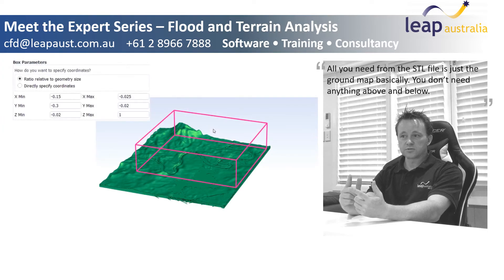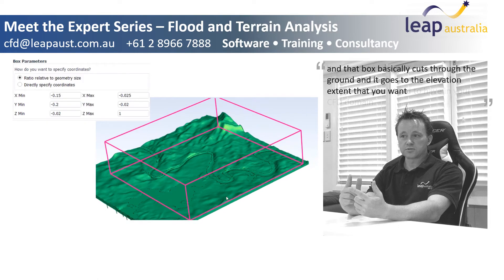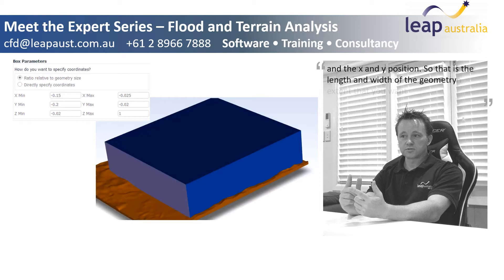All you need from the STL file is just the ground map, basically. You don't need anything above and below. You can set in Fluent Meshing a box size, so this box will encompass everything you intend to have in your CFD domain. That box basically cuts through the ground and goes to the elevation extent that you want, and the X and Y position — the length and width of the geometry.